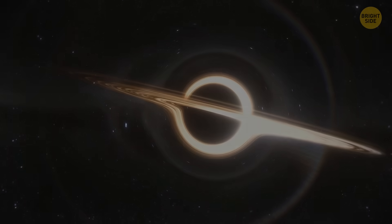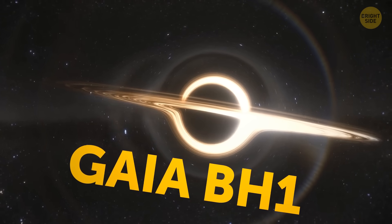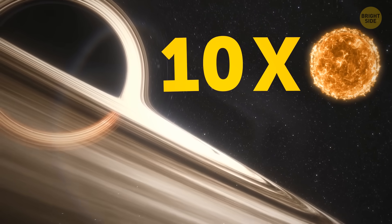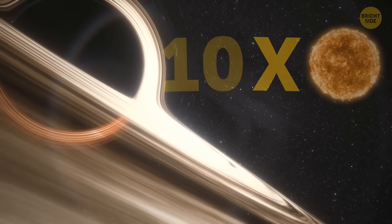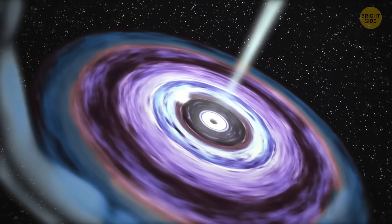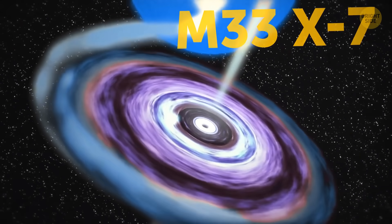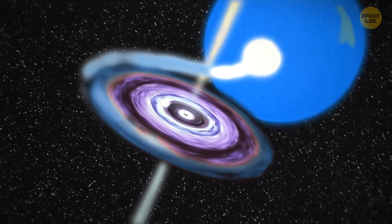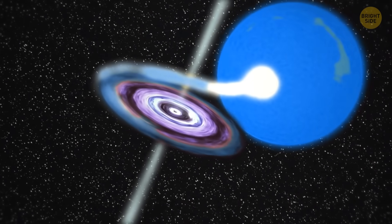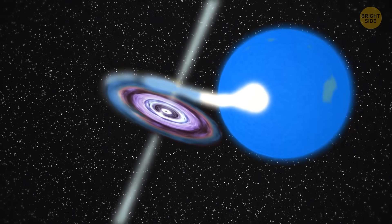The one that's closest to us is called Gaia BH1. It weighs about 10 times more than the sun and can reach many miles in size. And the farthest one is called M33X7. It's somewhere around 3 million light-years away from us, and right now, it's eating a blue giant that's several times bigger than our sun.